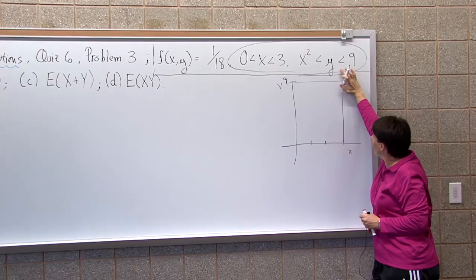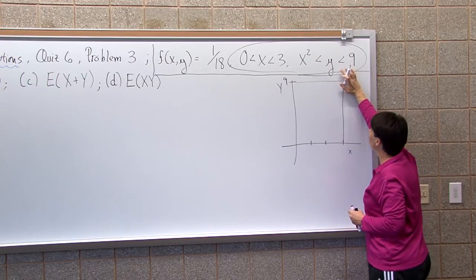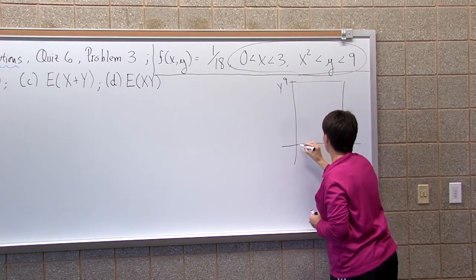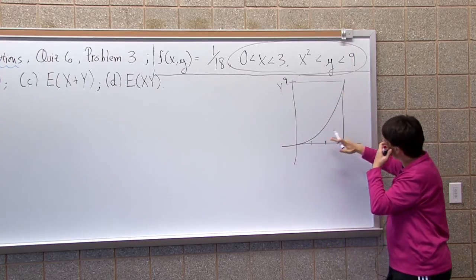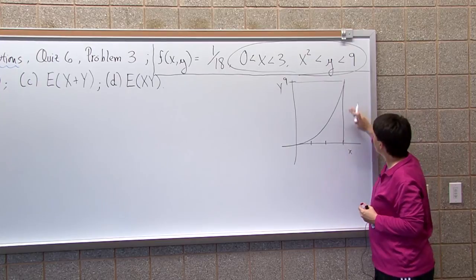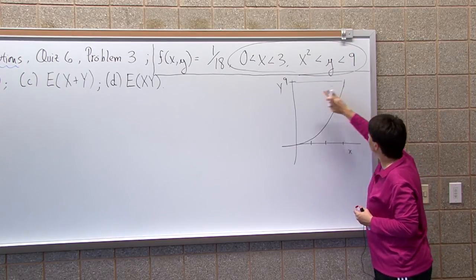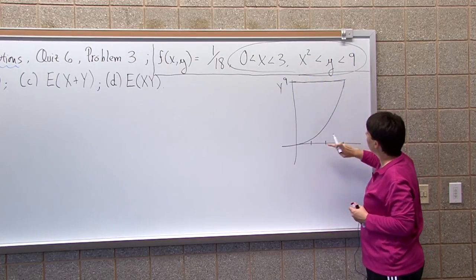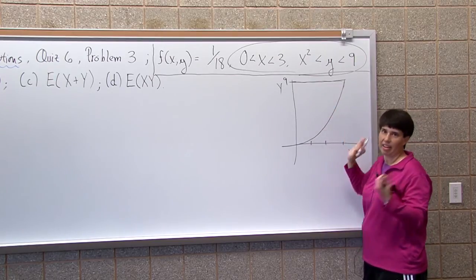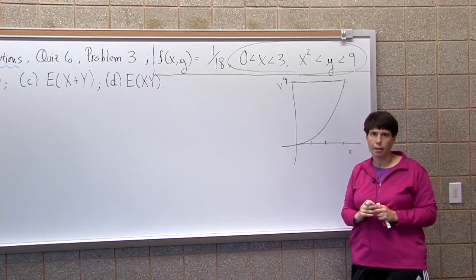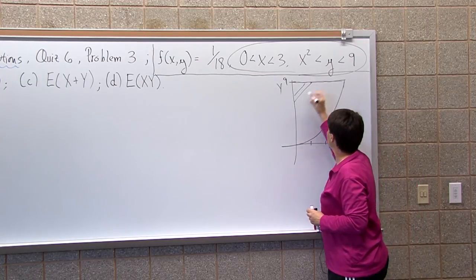This is going to define my region more clearly. Y should be bigger than x squared but less than 9. The graph of y equals x squared, you're going to get this parabola. I want y's above x squared and less than 9. This is my region of interest right here.